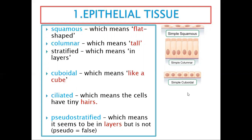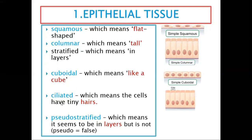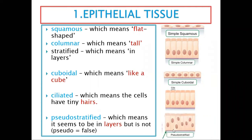Ciliated tissue has hair-like structures. So if you have a columnar cell with hair on top, you call it columnar ciliated. If a cuboidal cell has hair on top, you say cuboidal ciliated. If squamous has hair on top, it is squamous ciliated. If squamous has layers, it is squamous stratified.